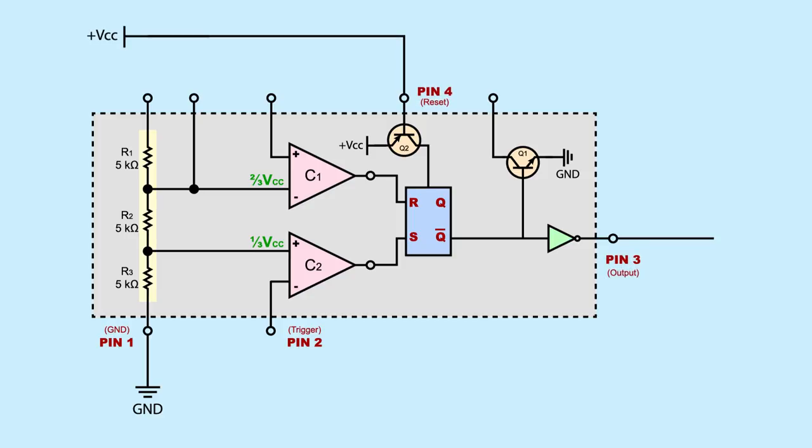Pin four is a reset pin. It gets connected to VCC to keep it inactive. When not in use, pin five gets connected to ground using a 0.01 microfarad capacitor. Pin five is control voltage and can be used to adjust the threshold at which pin six is triggered. Pin six is used to reset the output of the 555 back to low.